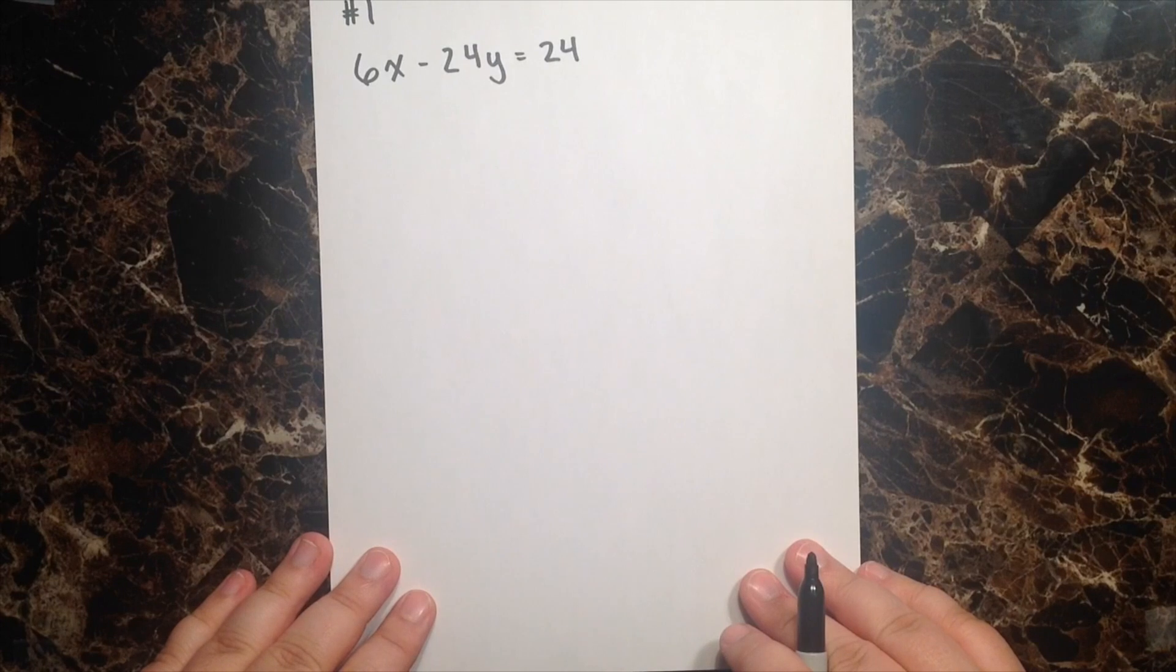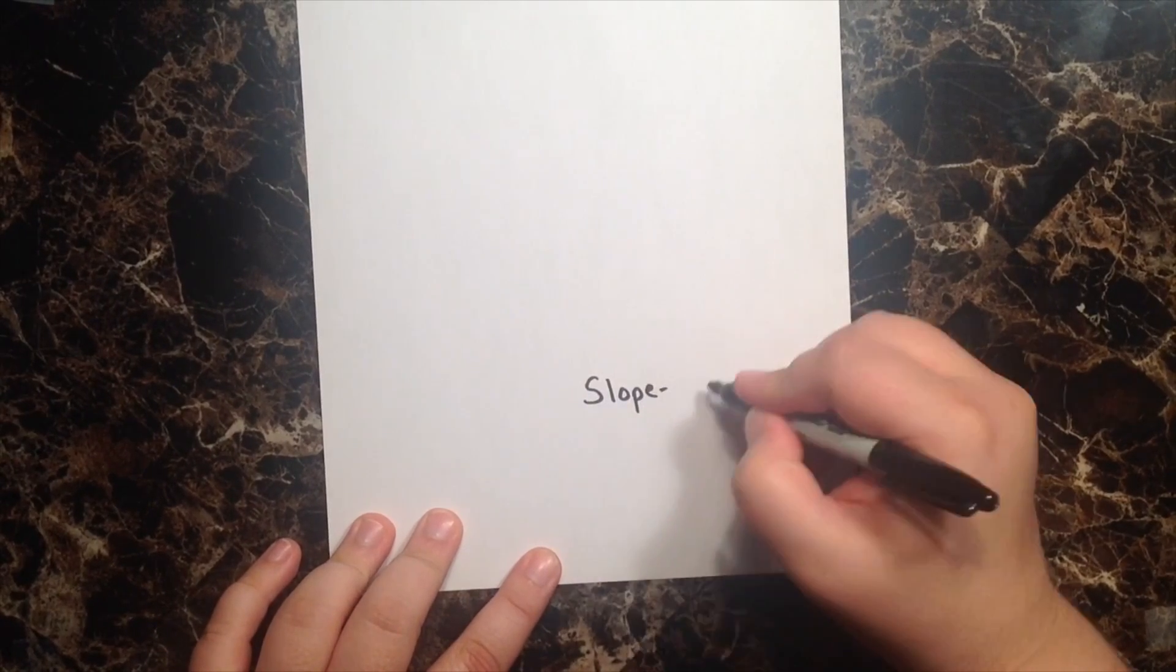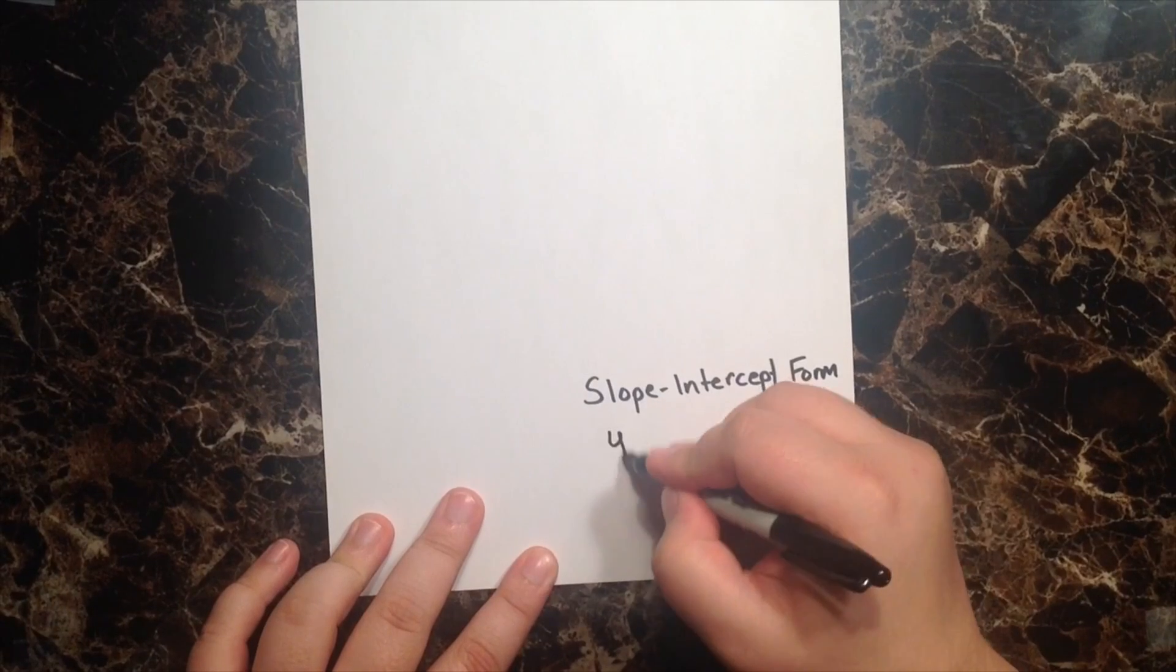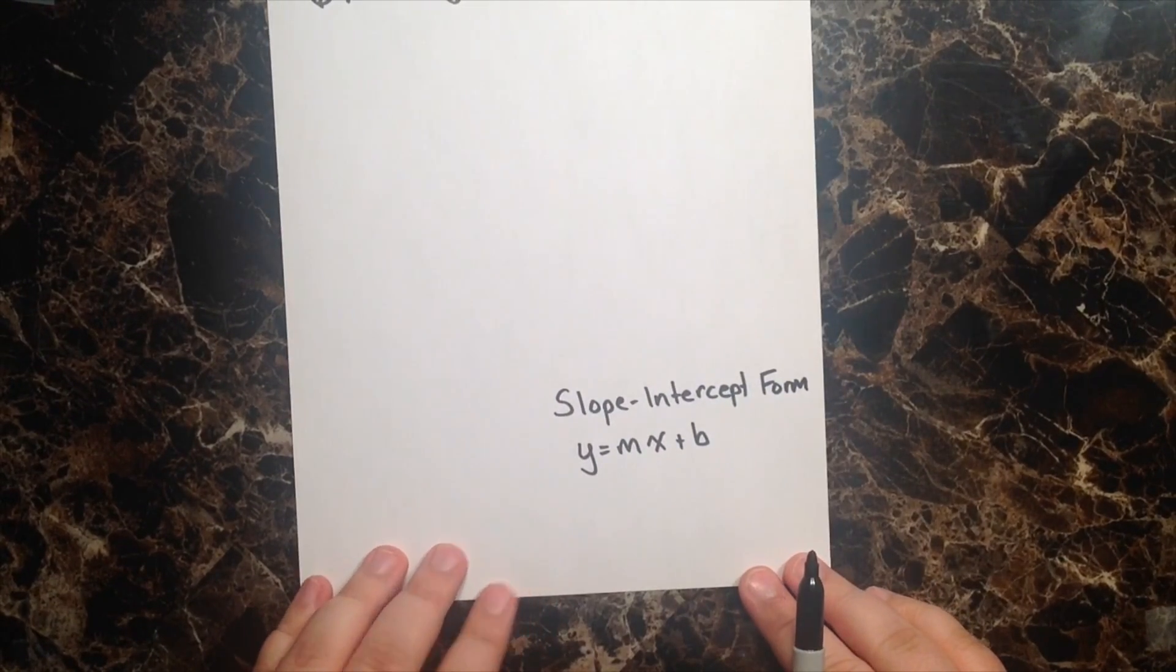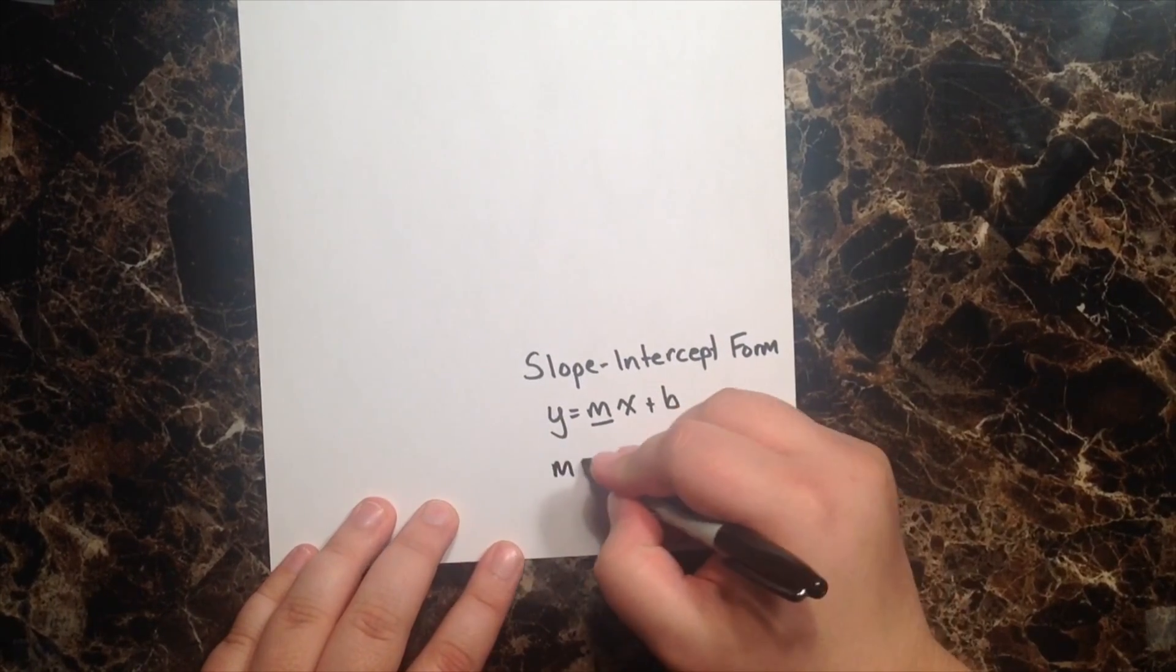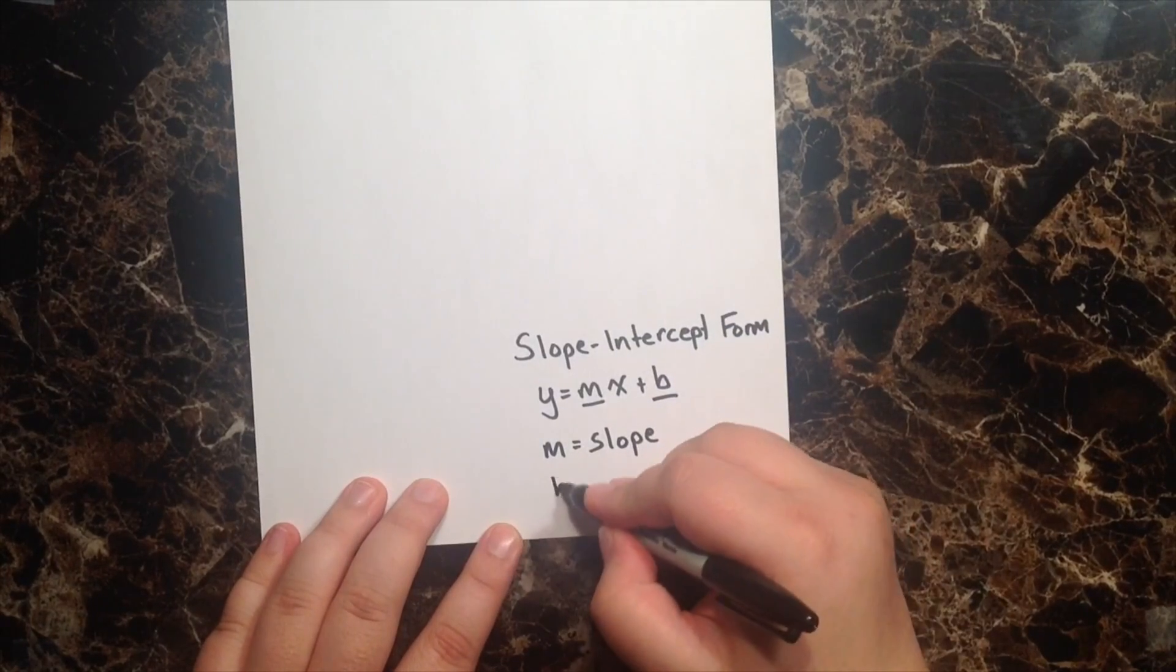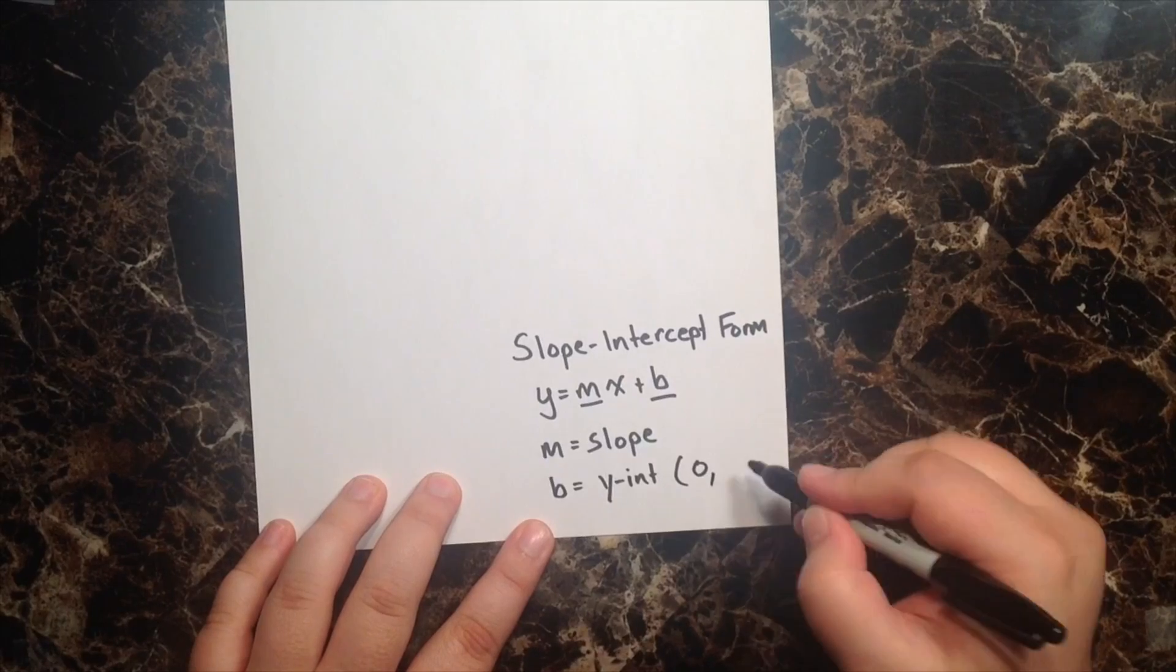you might remember that in order to graph an equation, the equation needs to be in a specific form. And that form is called the slope-intercept form. And the reason that it needs to be in this form is because when it's in y equals mx plus b, we're able to easily identify two key components that we're going to need when graphing. And the first is represented by our m. And m, you may remember, is going to be our slope.